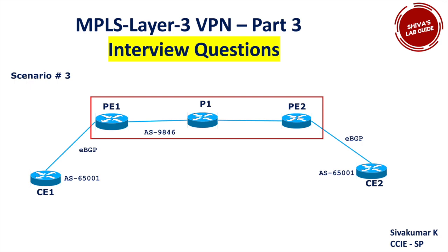Scenario three is one I've seen pop up most often in Layer 3 VPN interviews. CE1, PE1, CE2, and PE2 are running eBGP. CE1 has AS number 65001 and CE2 also has AS number 65001. The MPLS cloud — PE1 and PE2 — uses AS number 9846. The question is: when you initiate a ping from CE1 to CE2, will it work?